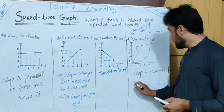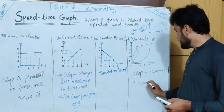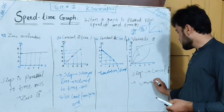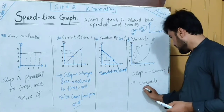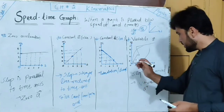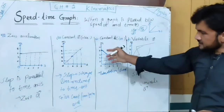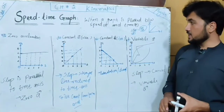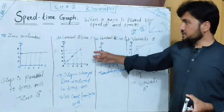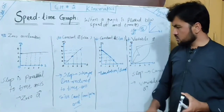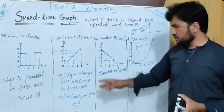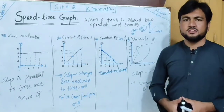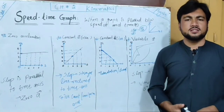We call this variable acceleration. We have completed the speed-time graph analysis and interpretation. If we calculate the slope, we get the acceleration.